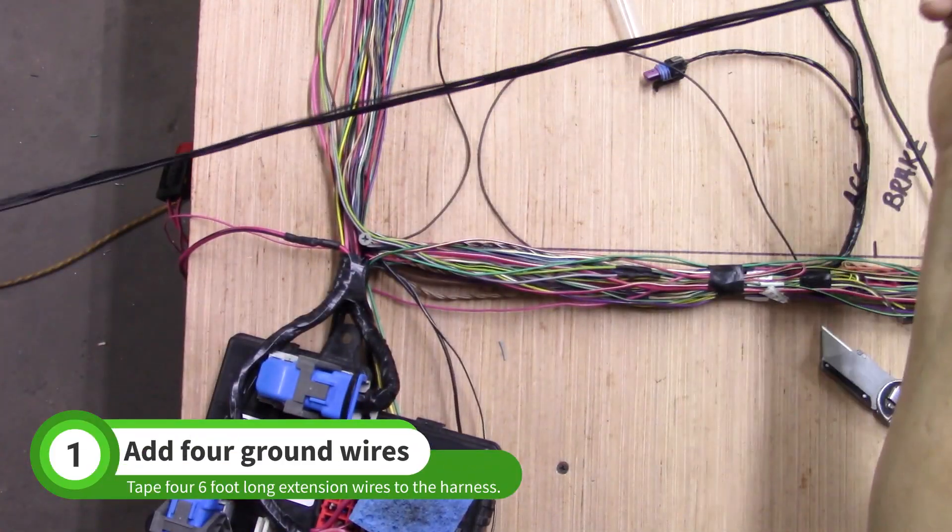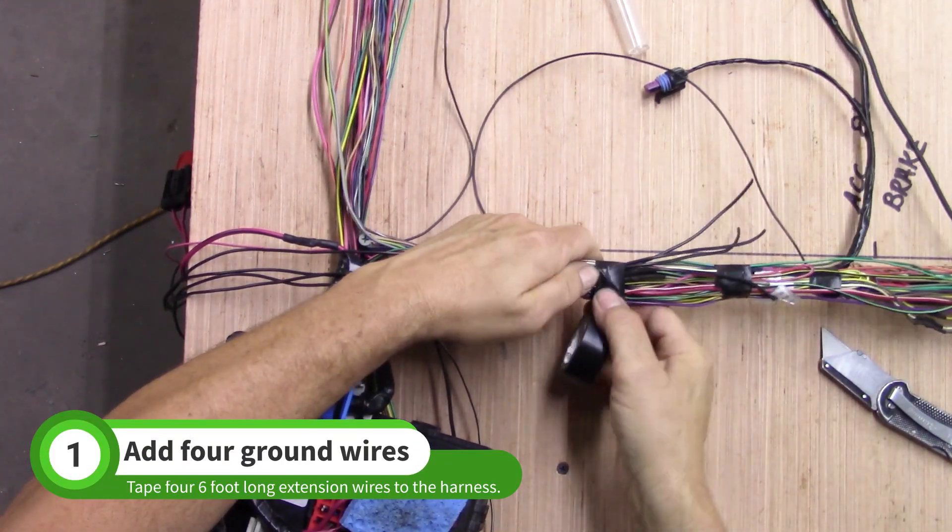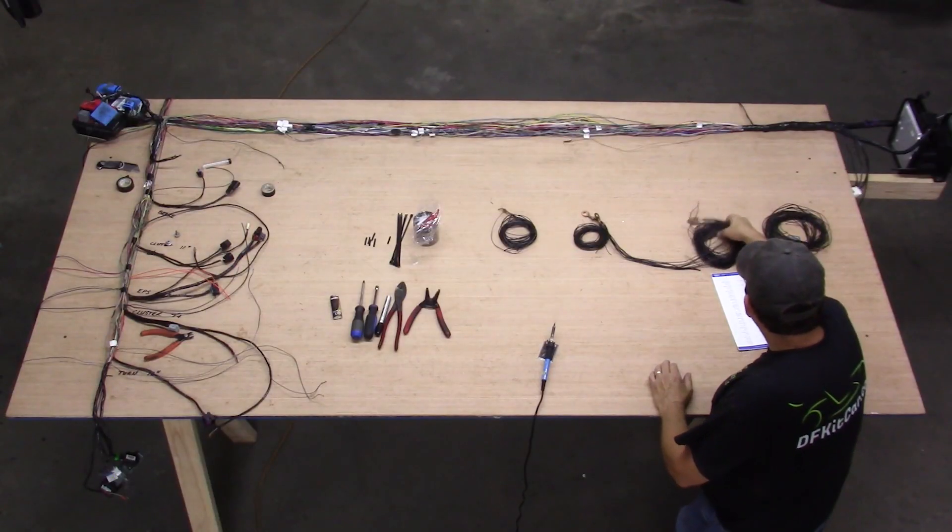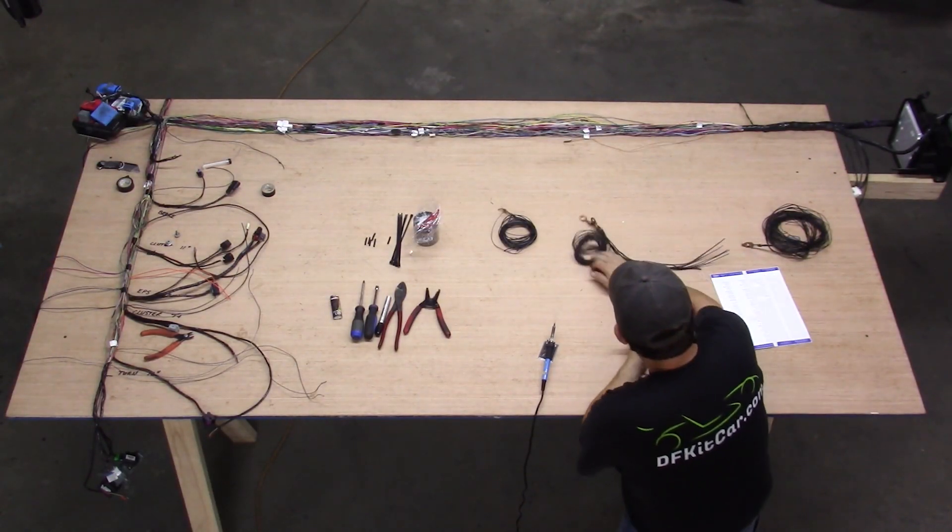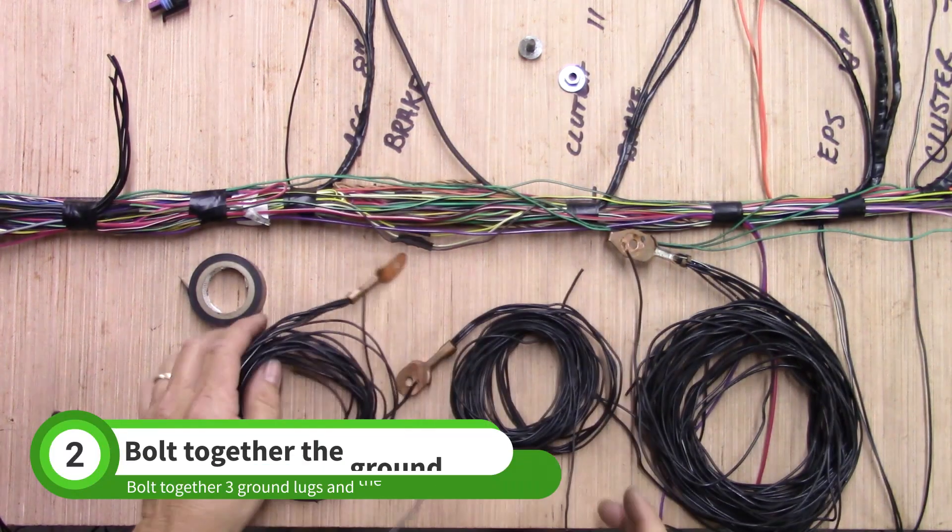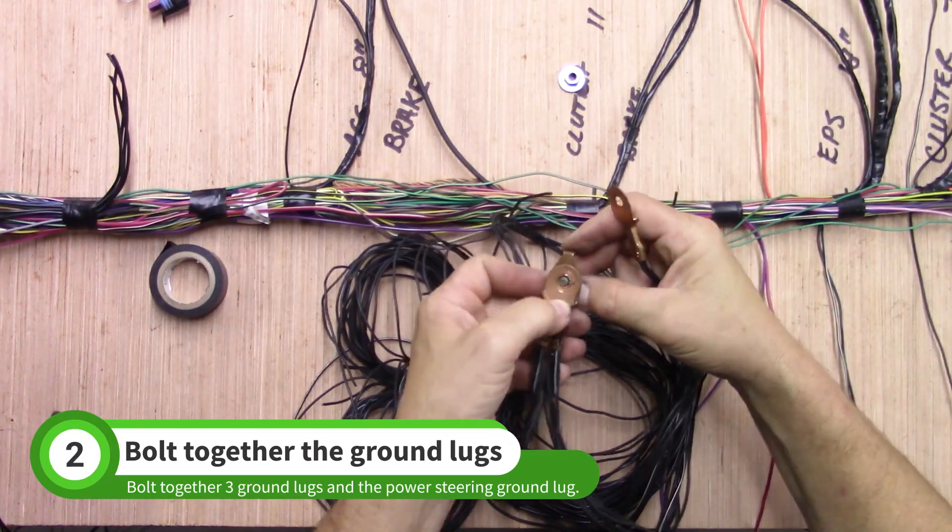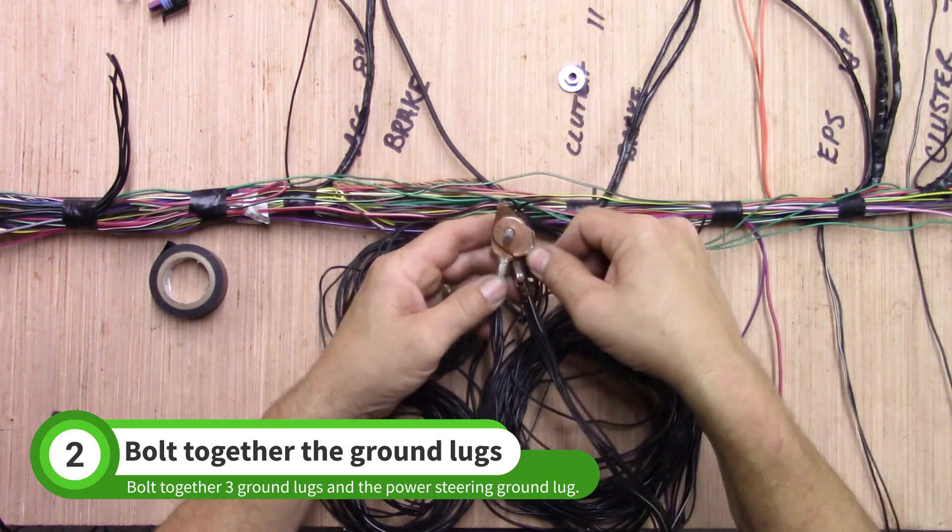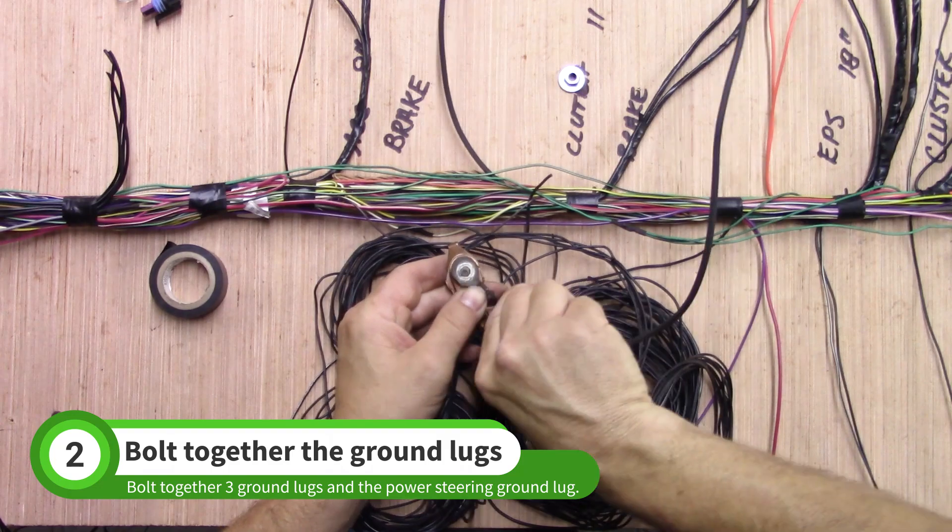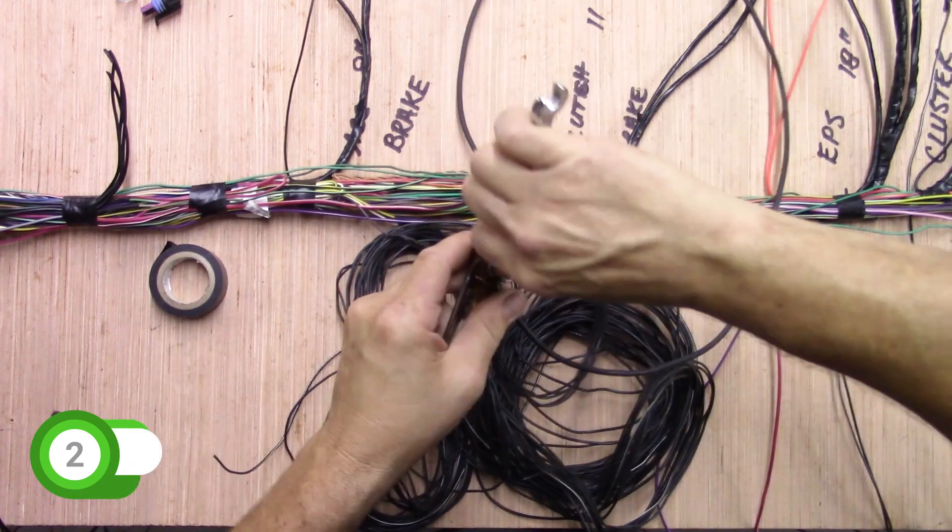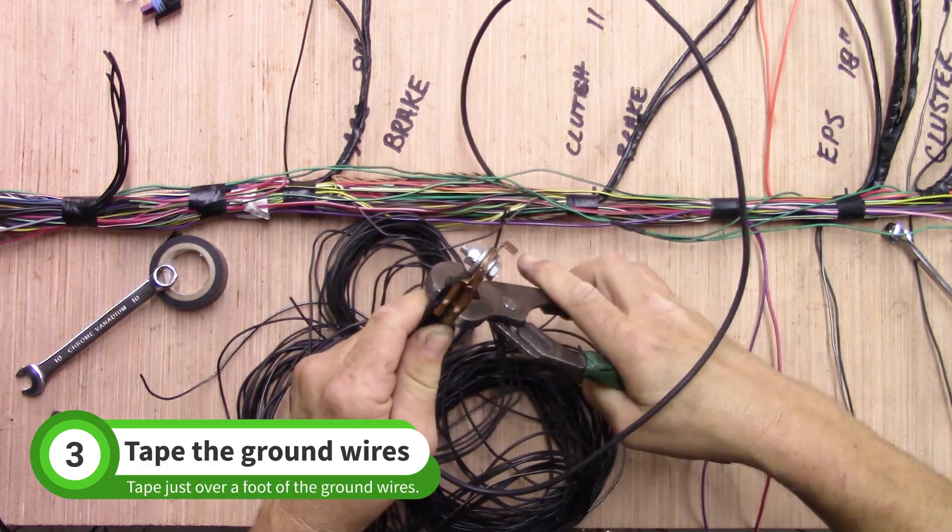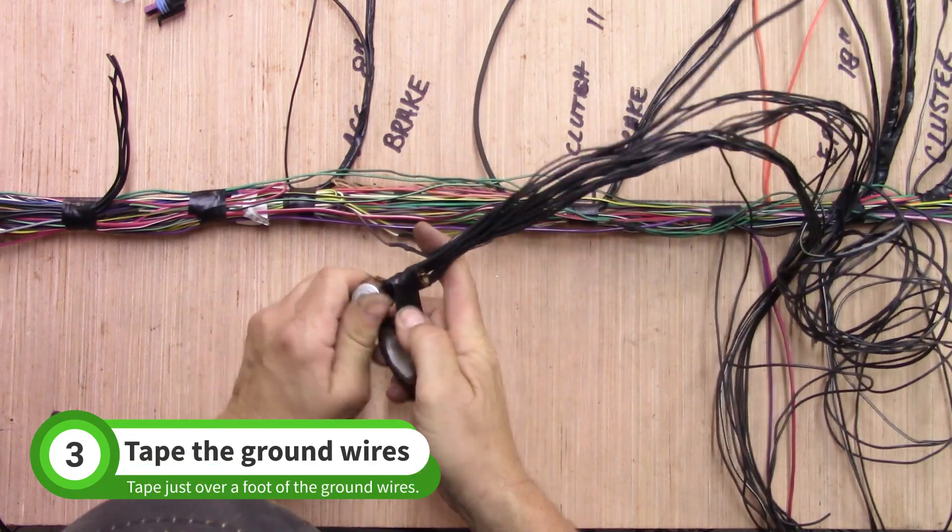Tape four six-foot black ground wires near the BCM. Grab three of the bundles of ground wires with at least 18 wires total. Insert a donor bolt through all of the ground lugs. Don't forget the power steering ground lug. Use pliers to close the ground lugs up closer to each other. Tape just over a foot of the ground wires.